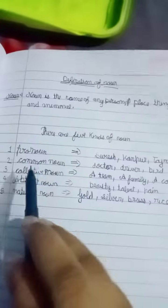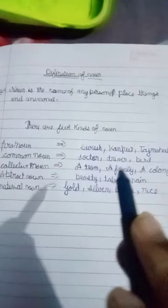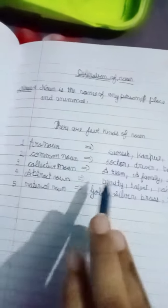Proper noun: Suresh, Kanpur, Taj Mahal. Common noun: doctor, driver, bird. Collective noun: a team, a family, a colony.